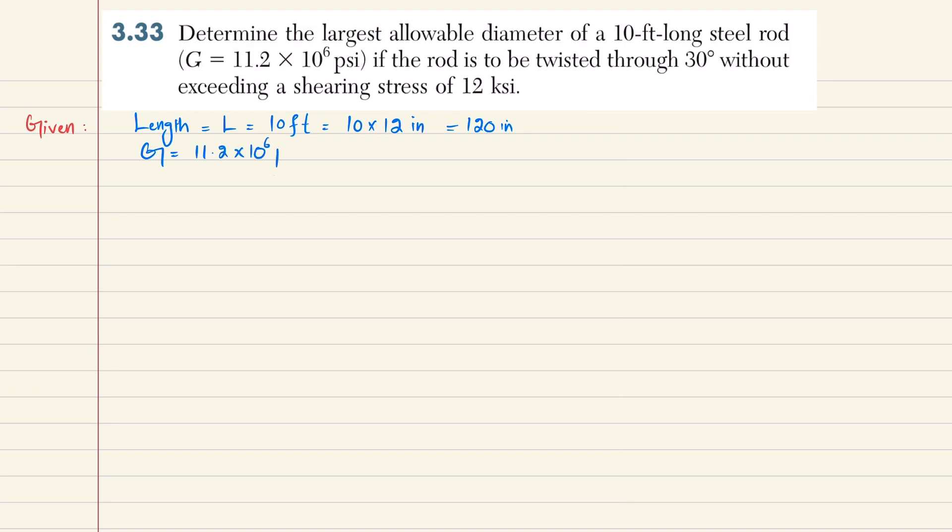The angle of twist θ is given as 30 degrees. We know that 2π radians equals 360 degrees, so 1 degree equals 2π/360 radians, or π/180 radians.